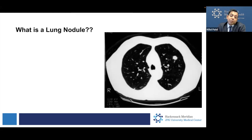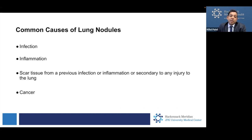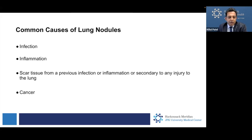The question becomes: what are the common causes of lung nodules? You can broadly classify them into four different buckets. It could be secondary to an infection, secondary to inflammation, or secondary to scar tissue from a previous infection, inflammation, or some injury the lungs were exposed to — like a gas, smoke, or chemicals that caused some scarring. Scar tissue is dead tissue. Or it could be cancer, which is the most worrisome.